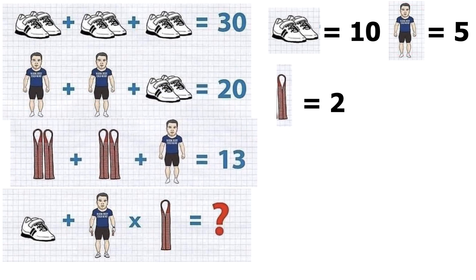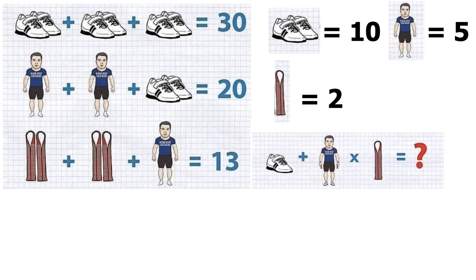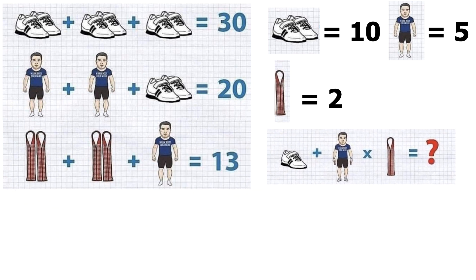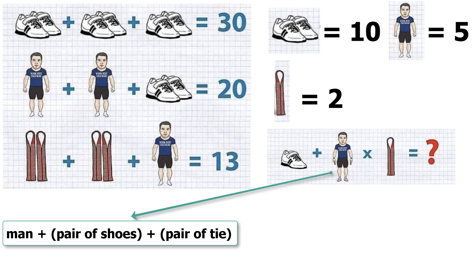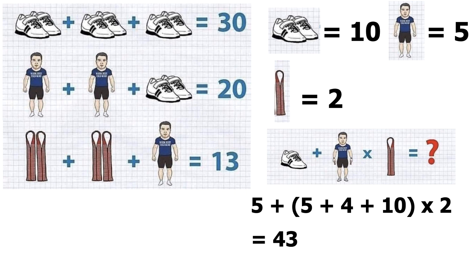Now we need to evaluate the value of final equation. That is single shoe plus man with two ties and shoes multiplied with single tie. After substituting, equation becomes 5 plus 5 plus 4 plus 10 multiplied with 2. This results in 43. It is important to observe that 5 plus 4 plus 10 multiplied with 2 is evaluated first by the order of operations, because multiplication takes precedence over addition.